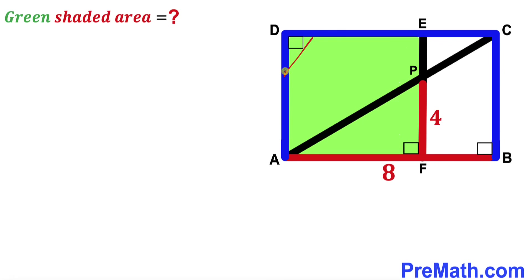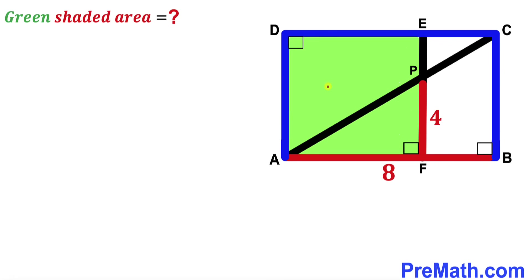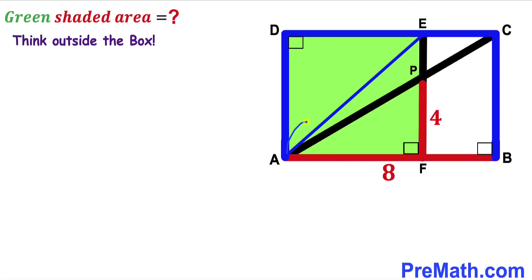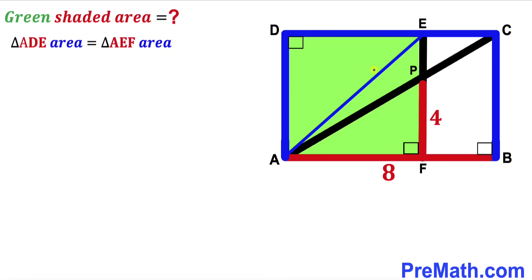Let's focus on the green shaded rectangle AFED. Since we are interested in calculating its area, we are going to think outside the box to make our job simple. I'm going to connect the two vertices A and E. Now we can see that AE is the diagonal of this green shaded rectangle, and this diagonal AE divides the rectangle into two triangles.